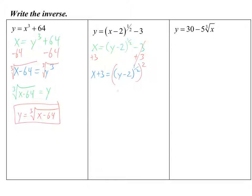To get rid of a 1 half power, you square both sides, and that would leave you y minus 2 over here. But if I square the right side, I also have to square the left side.